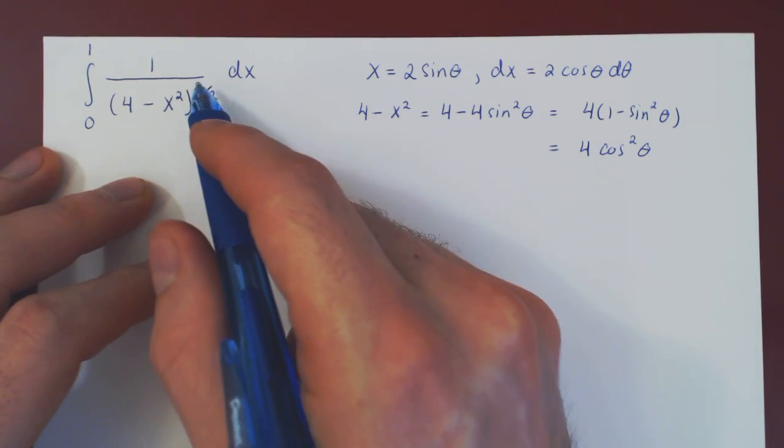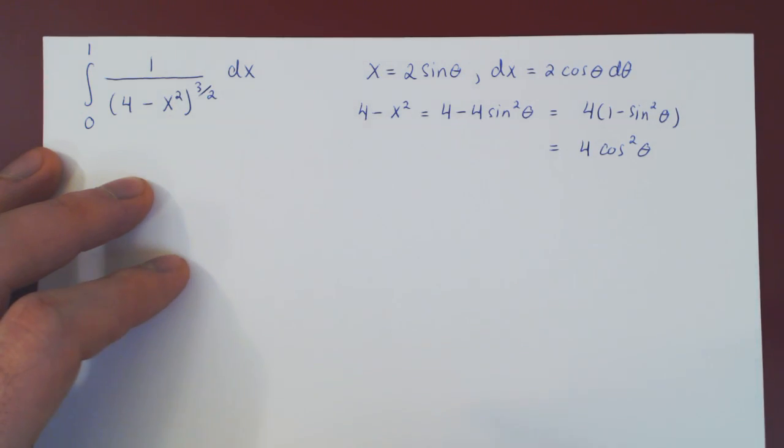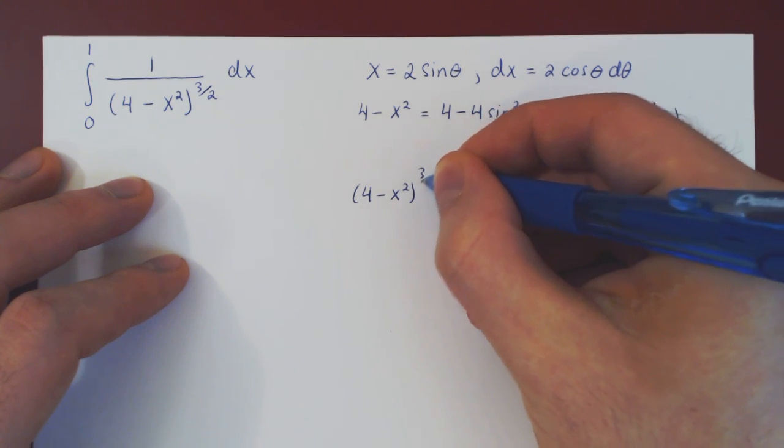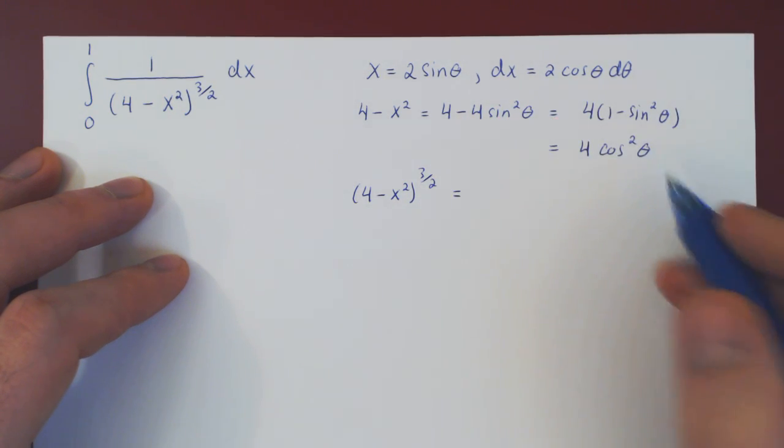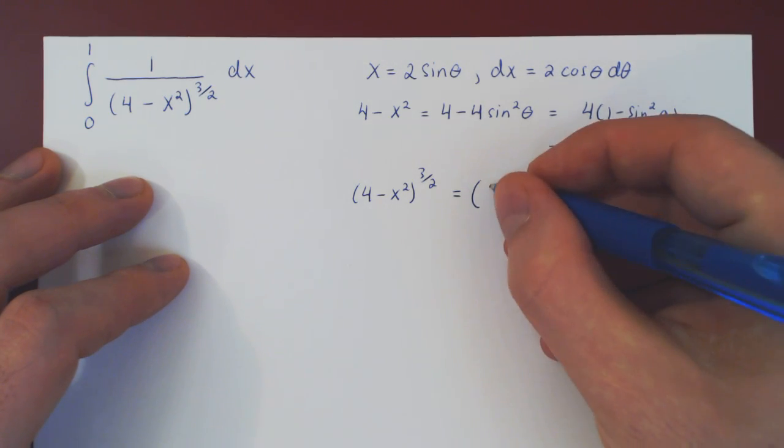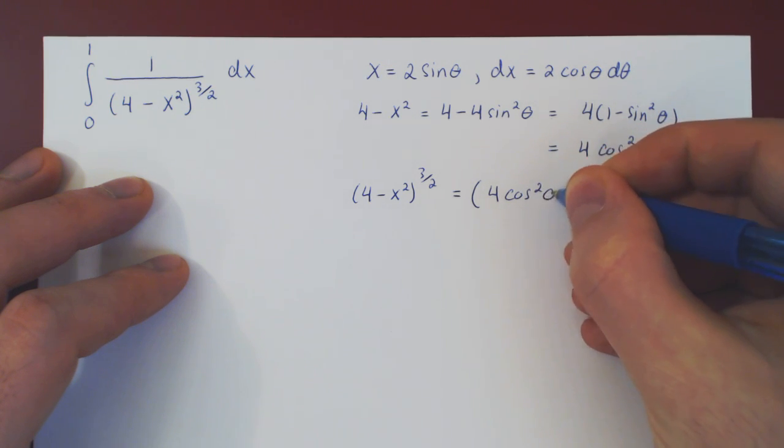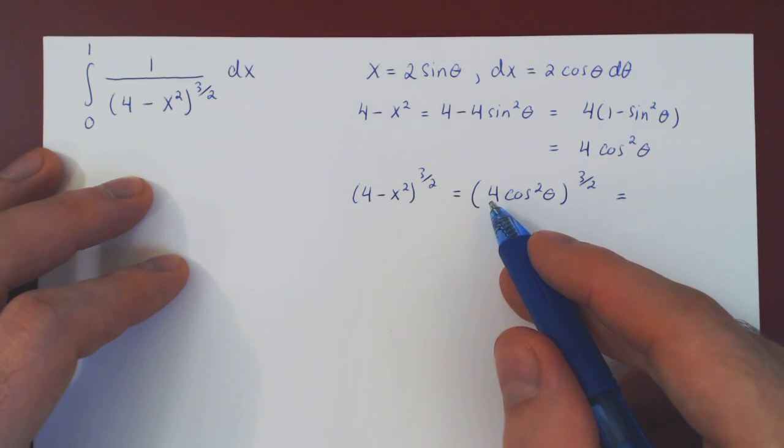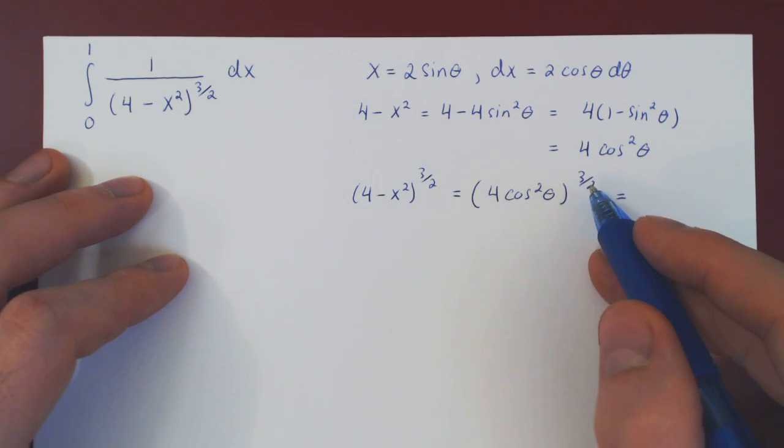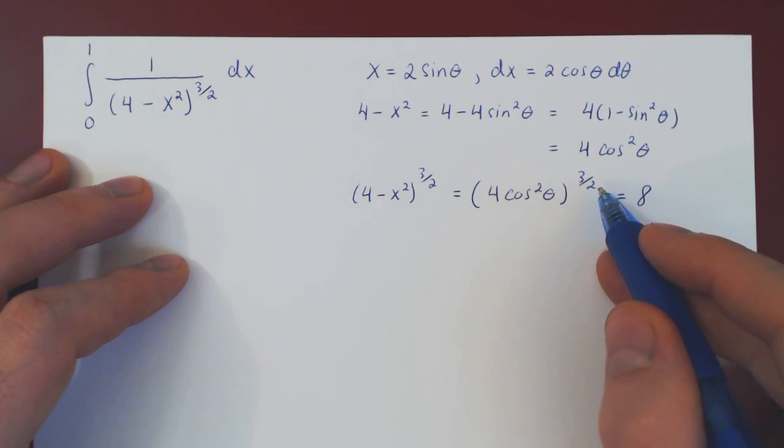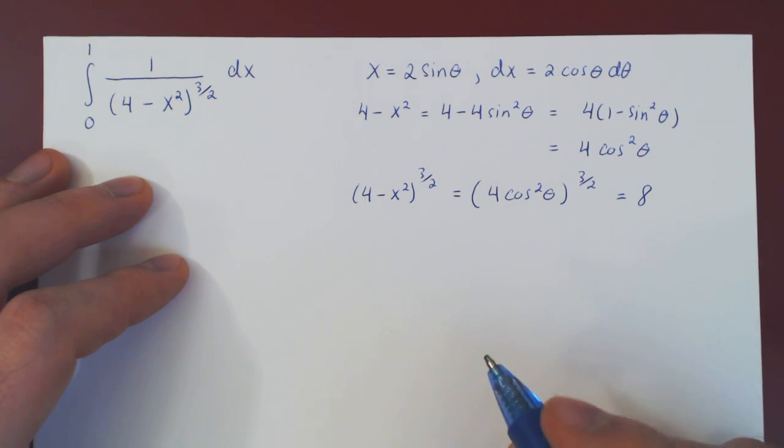And now let's take the power of 3 over 2 onto 4 minus x squared. So we have 4 minus x squared to the 3 half equals 4 times cos squared to the power of 3 over 2. And I put this tribute on both terms. 4 to the 3 half, take the square root first, root of 4 is 2, 2 cubed is 8, so we have 8. Cos squared, take the square root first, which gives you cos, cos cubed.